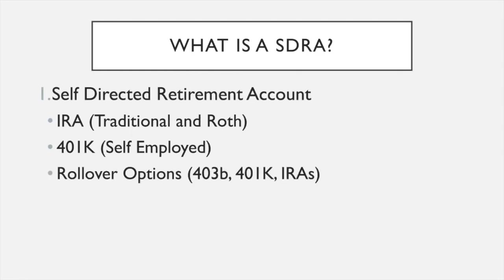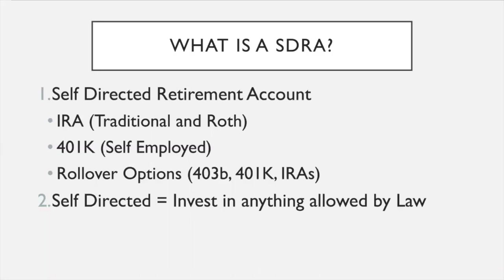It can also include some rollover options: your 403b, 401ks, and IRAs. These can all be rolled over into something that's self-directed. Self-directed means you can invest in anything that is allowed by law.